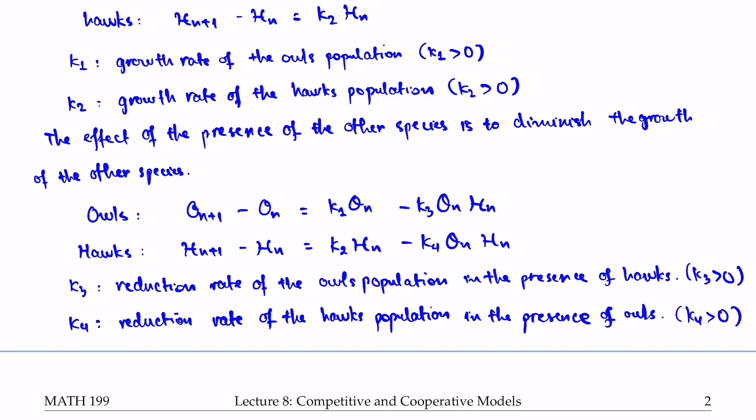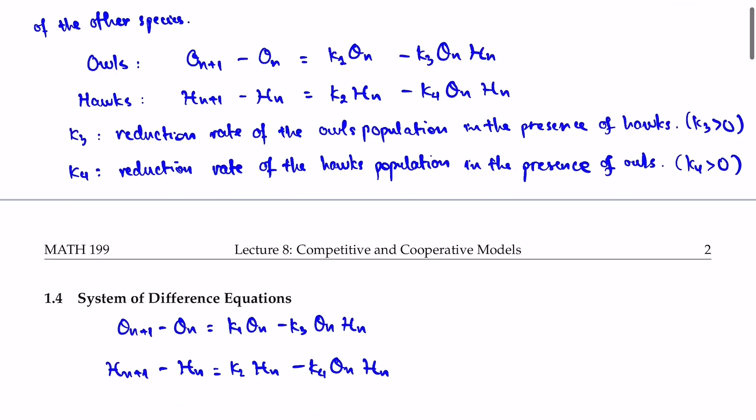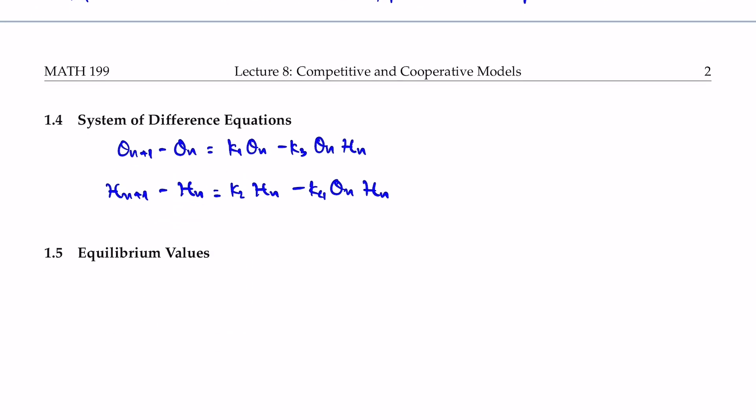The procedure is the same for every single model — even when we get to the disease model. We make the assumptions, use the assumptions to build our model, then when we have a system of difference equations, we solve for equilibrium values, then use parameter values and initial values to simulate the results.